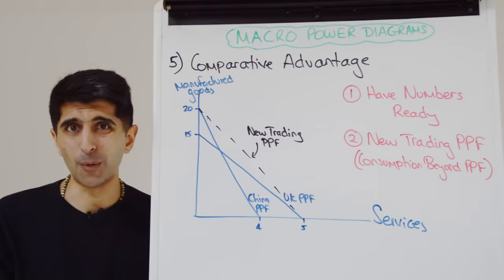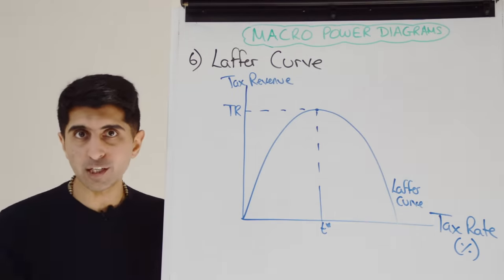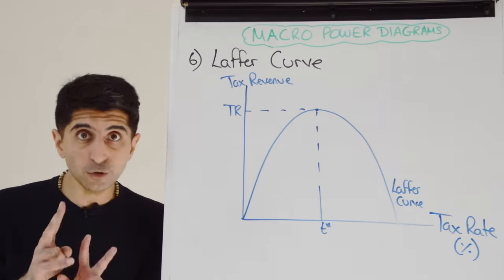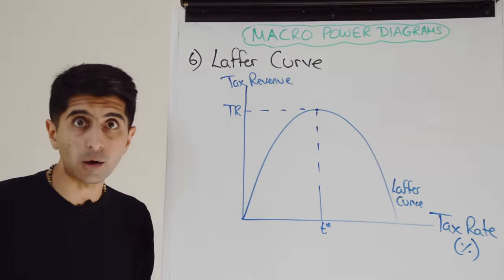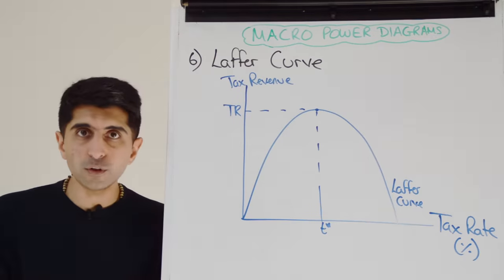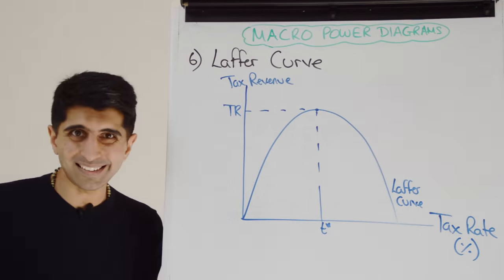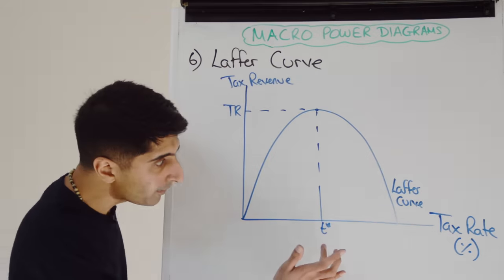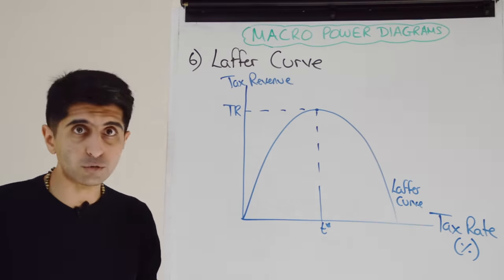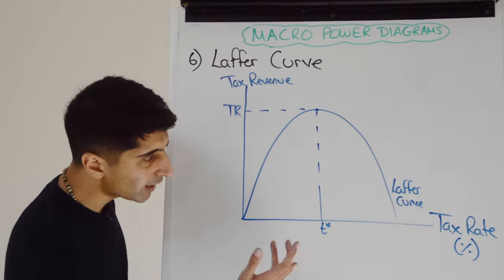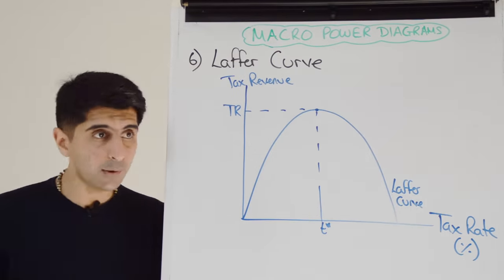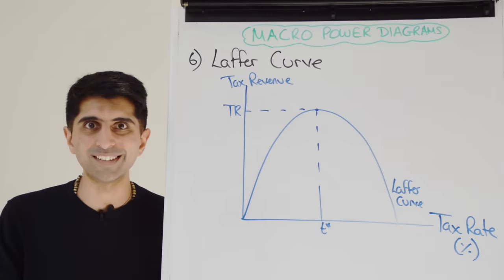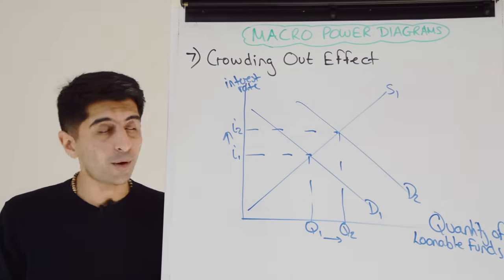Now we'll look at three awesome diagrams to evaluate macro policy. Number six is the Laffer curve — great evaluation for fiscal policy, usable in two ways. There is an efficient tax rate T-star where tax revenue is maximised. One use: evaluating an increase in income tax — if the government increases income tax beyond T-star, that will actually reduce tax revenue. The other use: if the government cuts income tax, the evaluation is that tax revenue can actually rise. The Laffer curve illustrates this beautifully.